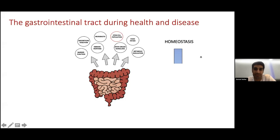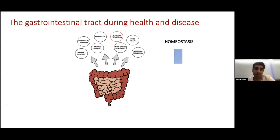The intestine is important for a number of essential processes that maintain homeostasis. These include absorption of nutrients, providing a barrier function against harmful pathogens, as well as immune regulation. And we know that the intestinal stem cells are important for a lot of these processes due to their ability to divide and replenish the epithelial cells that make up the gut, which carry out these functions.